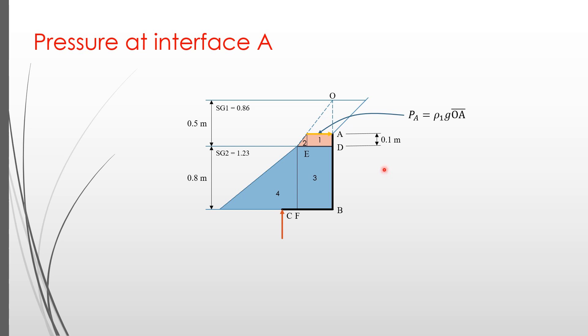At horizontal surface A, which is at the depth of OA equals 0.4 meters, the pressure is ρ₁ times g times OA. Here, ρ₁ is the mass density of the fluid with specific gravity equals 0.86, so ρ₁ equals 860 kilograms per meter cubed. The value of the pressure at A is the same with the lower part of the rectangle 1. Its value is 3374.64 Pascal.